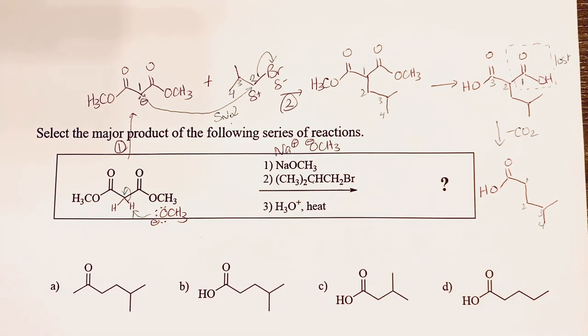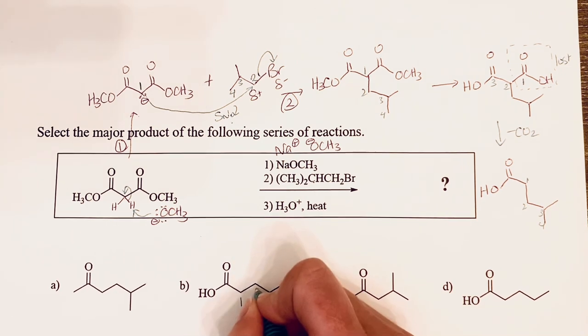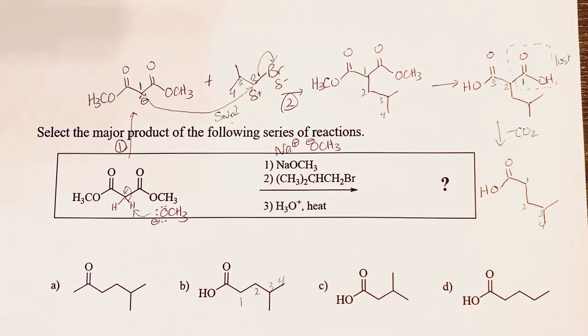If we take a look at our options, we've got a couple carboxylic acids here. We want to pick the one that structure matches what we're looking at here, and we can see that that is option B.